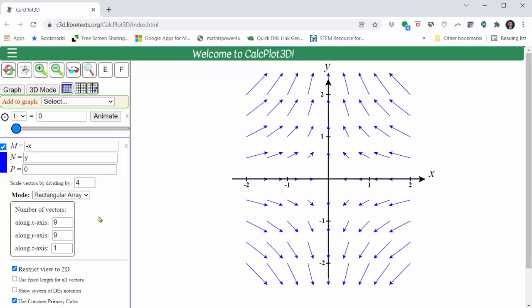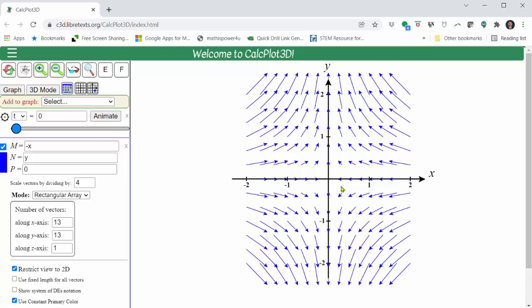We can also change the number of vectors graphed on the vector field by changing the number of vectors along the x and y axes. For example, if I change the 9s to 13s, notice we have a more dense vector field.